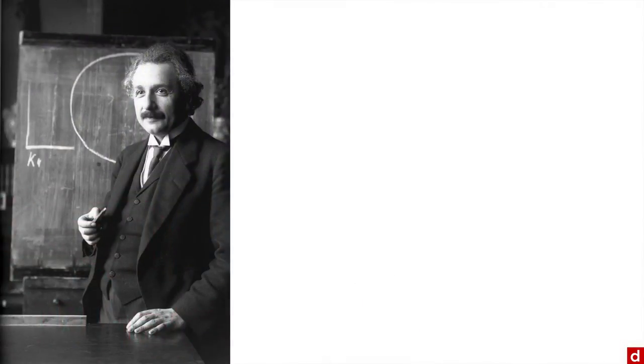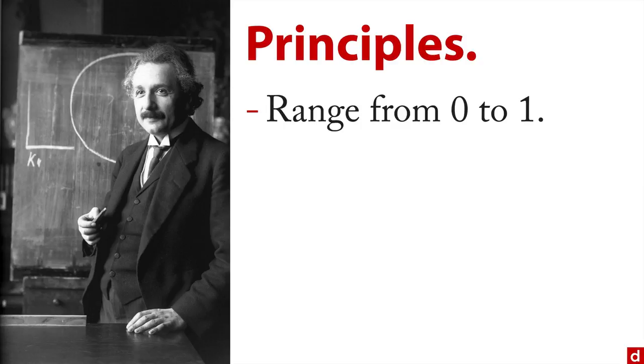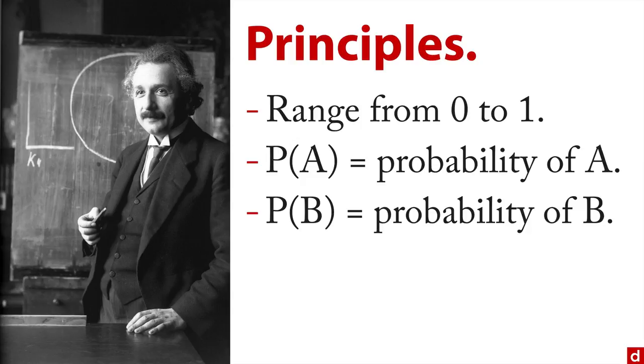Let's take a look at some basic principles. Probabilities range from zero to one, like zero percent to 100% chance. When you put P, that stands for probability, and then in parentheses, here A, that means the probability of whatever is in parentheses. So P(A) means the probability of A, and P(B) is the probability of B.